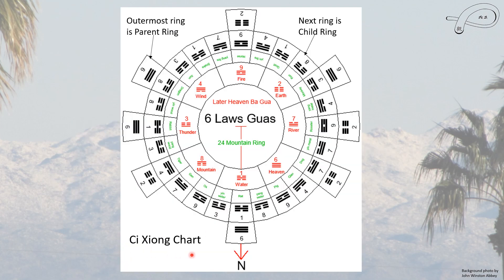This is the Qihong chart — it doesn't look like any other chart. The outermost ring is called the parent ring; the second ring is called the child ring. This is aligned with the 24 mountains: North 1, North 2, North 3, and so forth. I've given them the names associated with them rather than just numbering them. This is quite standard, and then we have the Later Heavens Ba Gua.